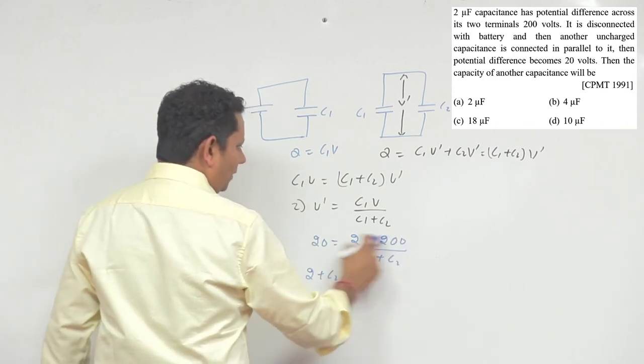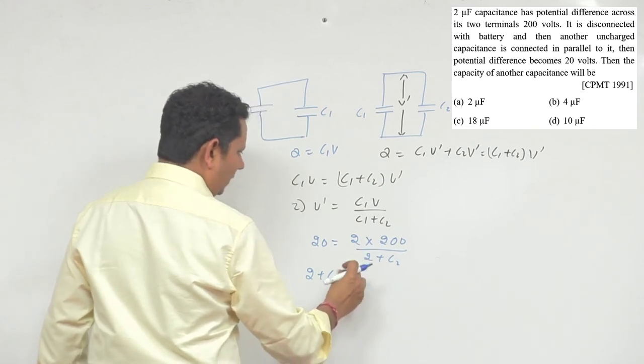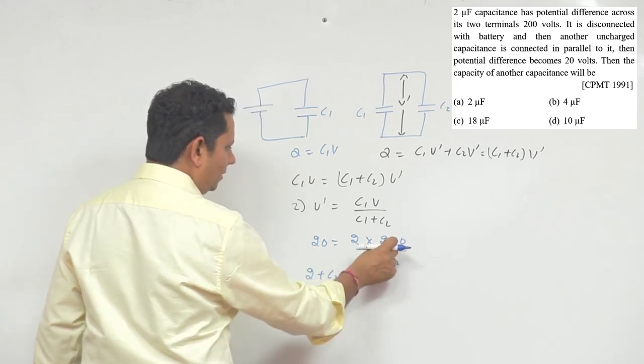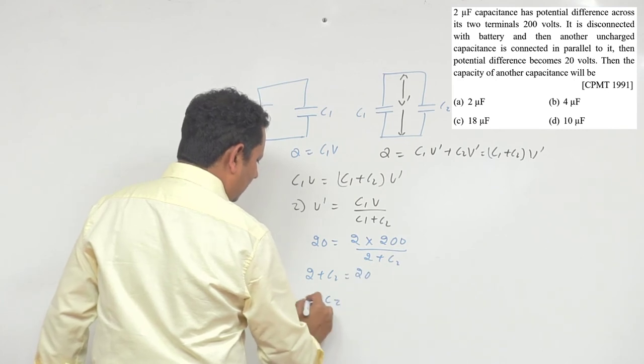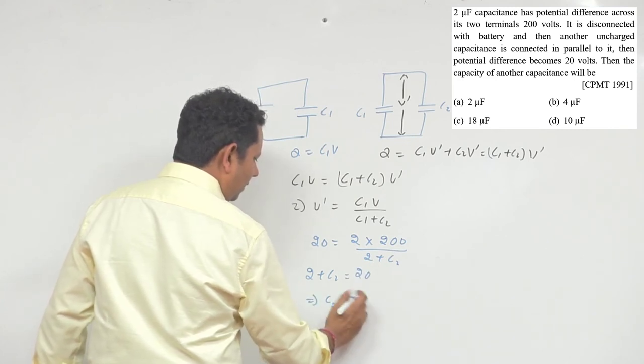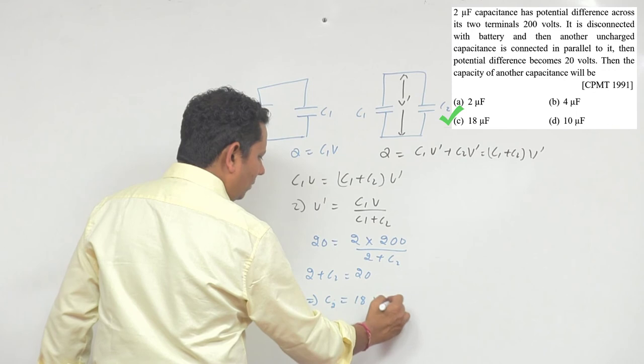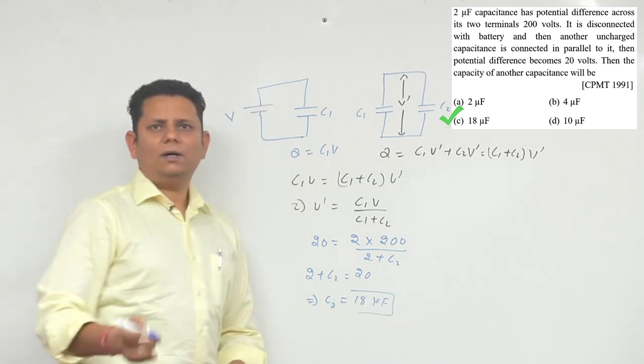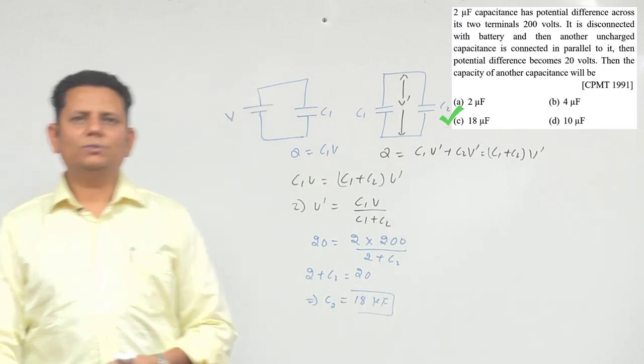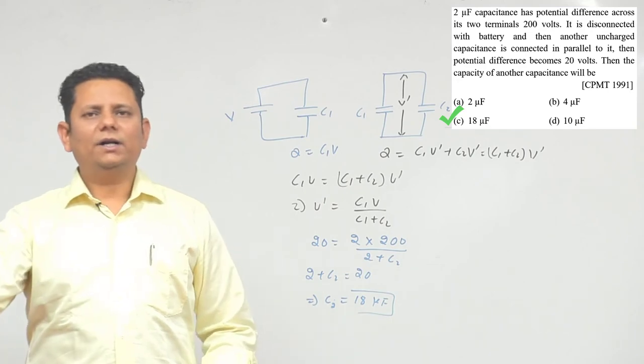After canceling, 2 cancels out and we get 20, which means C2 equals 18 microfarad. So based on this, we can say that option C, 18 microfarad, would be the right answer.